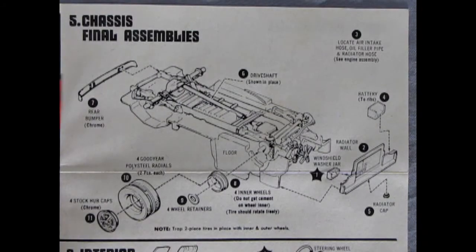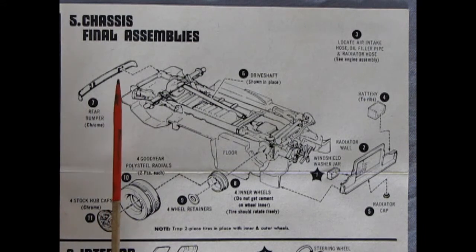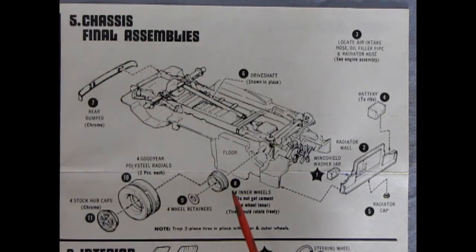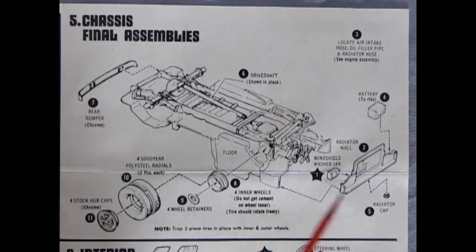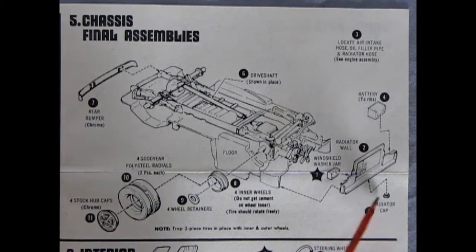Panel 5 shows our chassis final assembly and here we assemble on the rear bumper our wheels and tires and as you can see this one has a retainer clip that pops in so be careful there on how you glue it together. There's our radiator, the cap goes on up underneath because this is upside down. Windshield washer jar and a battery.